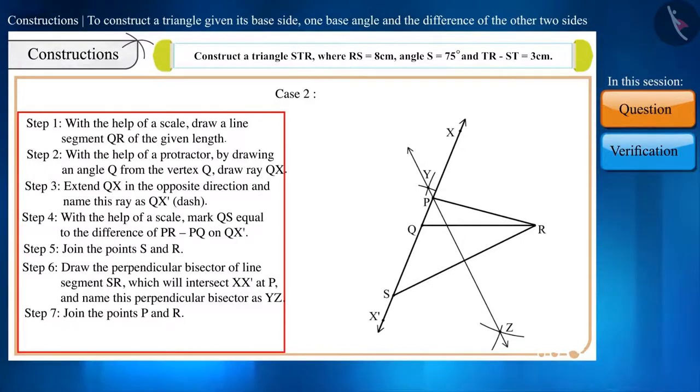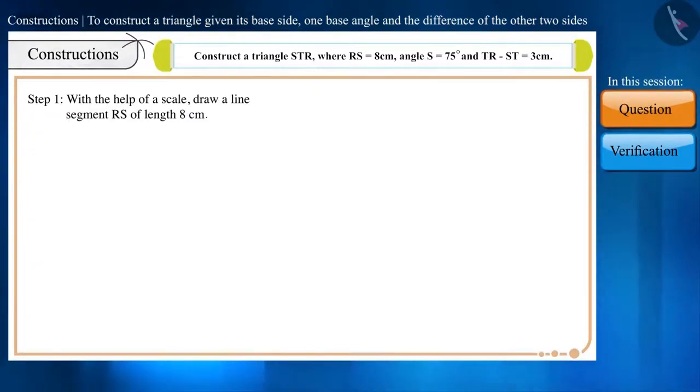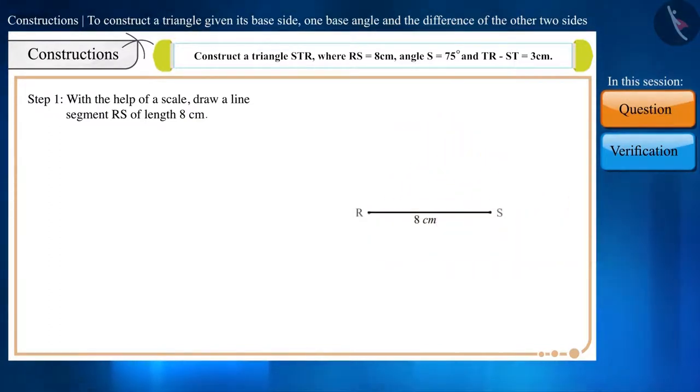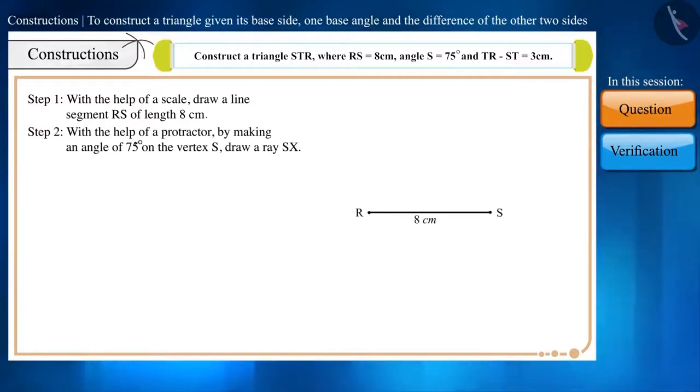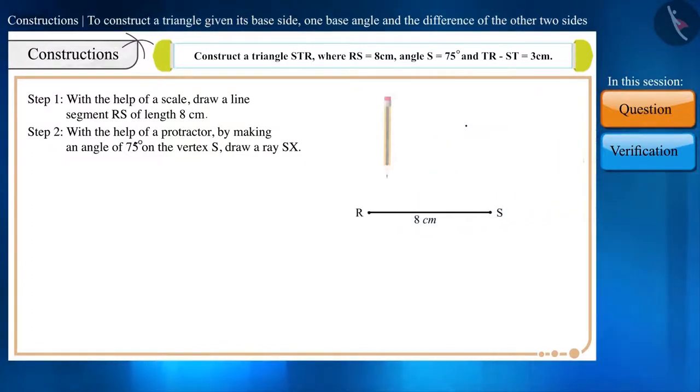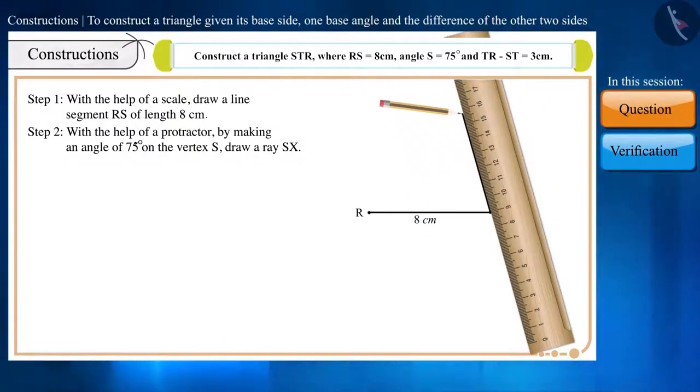Now, we will construct this triangle according to the steps of construction. Step 1: With the help of a scale, draw a line segment RS of length 8 cm. Step 2: With the help of a protractor, by making an angle of 75 degrees on the vertex S, draw a ray SX.